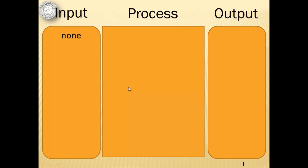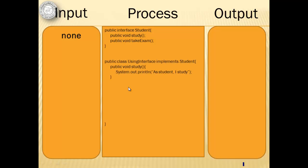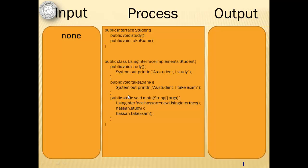There is no input in this activity. In the process, we are going to create an interface called Student with two abstract methods. Then we are going to have a class that implements the Student interface, and we are going to override the two methods, study and take exam. Finally, in the main method, we are going to instantiate the class and call the two methods. So our output will be the messages from the two methods.